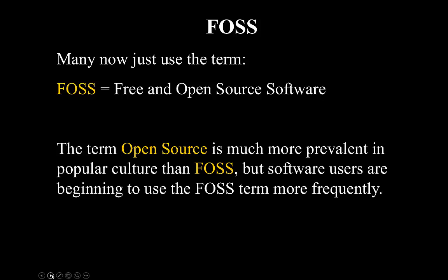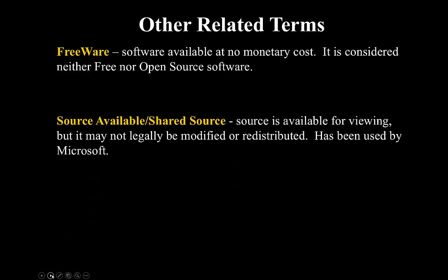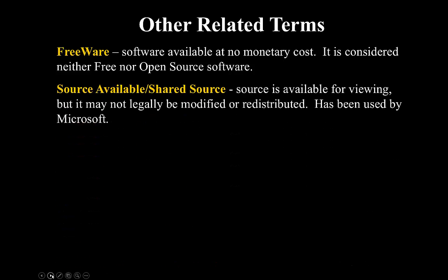Many are now used to using the term FOSS. Although 'open source' is much more prevalent in popular culture, software users are beginning to use FOSS more frequently. There are some other related terms you've likely heard, such as freeware — software available at no monetary cost, considered neither free nor open source. There's also source-available or shared source, where the source code is available for viewing but may not be legally modified or redistributed. You can see how the program works, but you're not allowed to modify it.